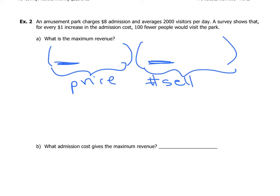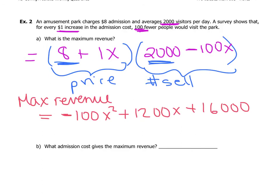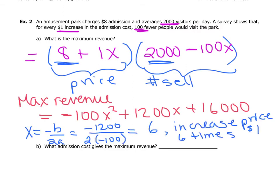Welcome back. The setup gives us: (8 + 1x)(2000 − 100x). We're increasing by one dollar per increase, starting at eight dollars, with two thousand visitors, and losing one hundred visitors per dollar increase. This is our quadratic representing maximum revenue. We now find the x-value of the vertex.